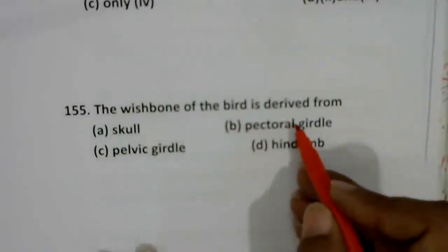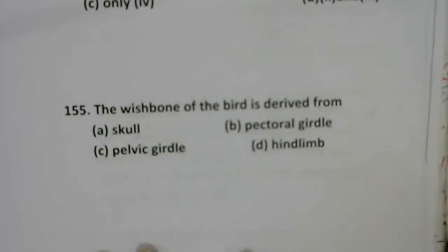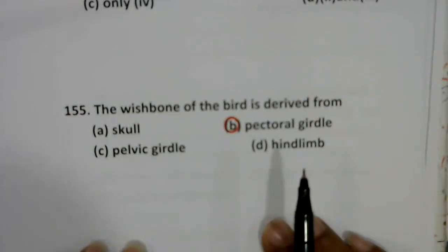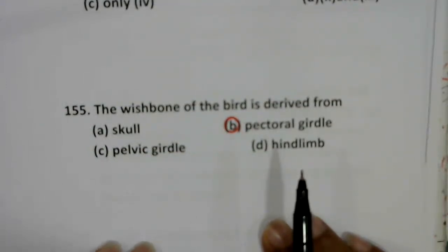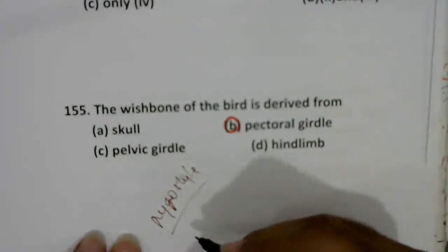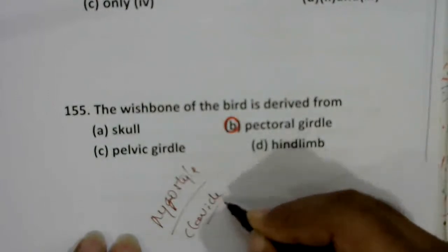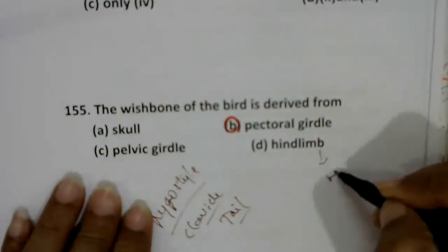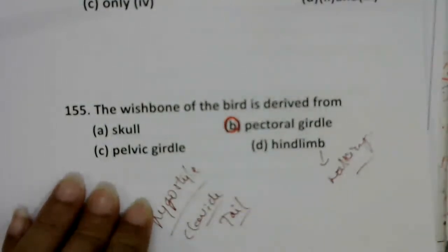The wishbone of the bird is derived from the pectoral girdle. The skull is monocondylic in birds. The pelvic girdle ends with the pygostyle, from which two clavicle bones arise forming the tail structure. Birds have a small reduced tail, hind limbs for walking, and four limbs modified into wings for flight.